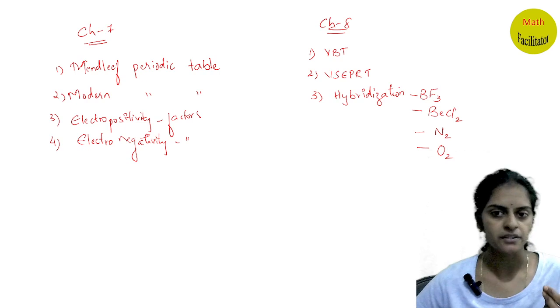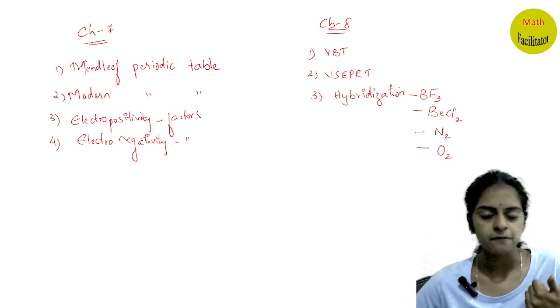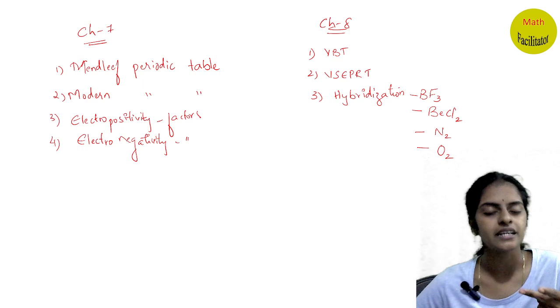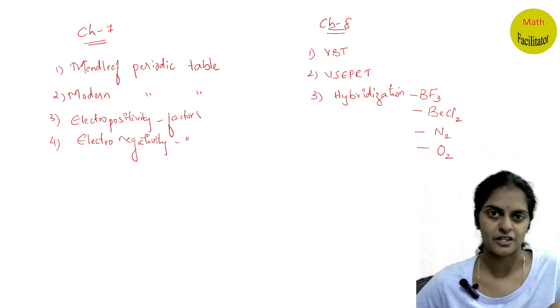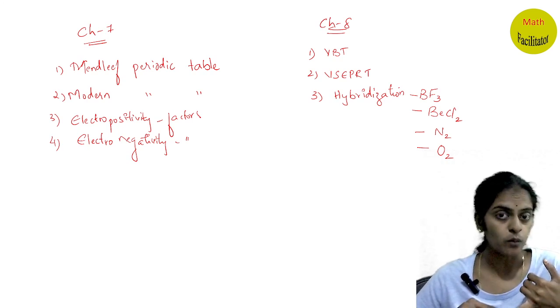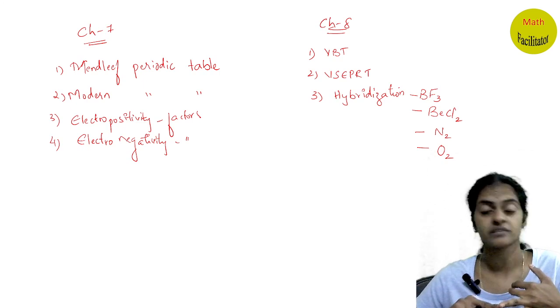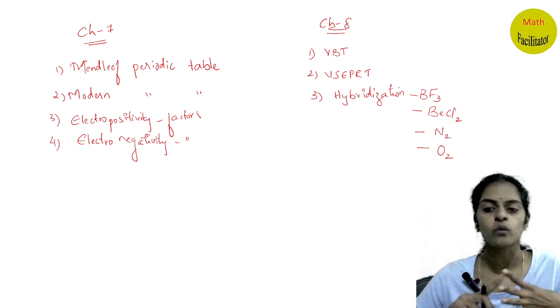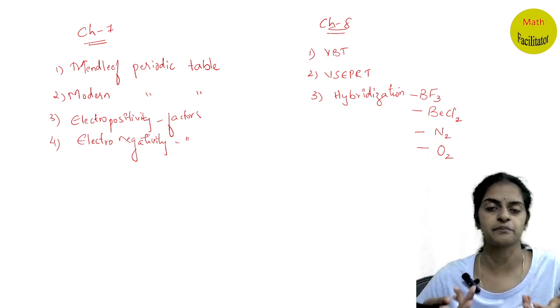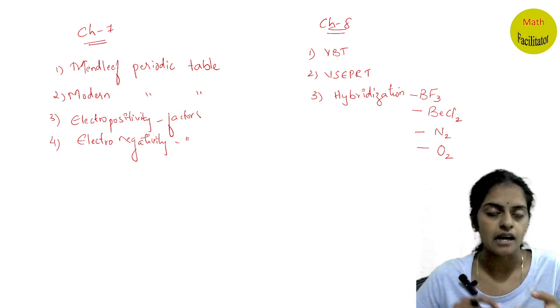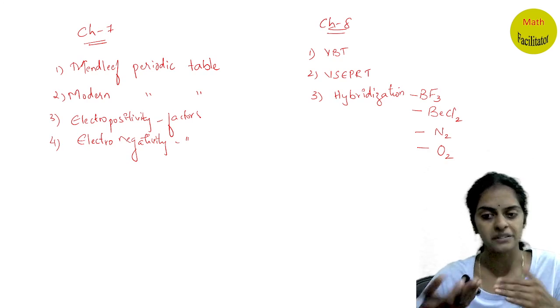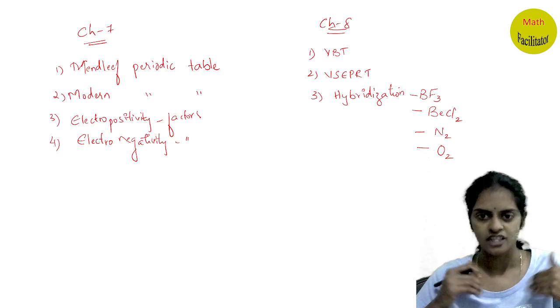Then chapter eight, you will learn valence bond theory, VBT, VSEPR theory and hybridization and most importantly, you will learn the molecule formation. You will see BCl2, 180 degree, very important, BF3, very important, N2O2. At least these four molecules, how are they formed, you should be able to draw. So what is hybridization and how is BF3 molecule formed, BCl2 formed, N2O2 formed. These are the basic questions which you should know from this particular chapter.